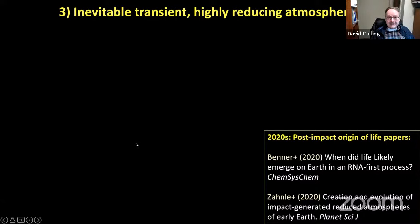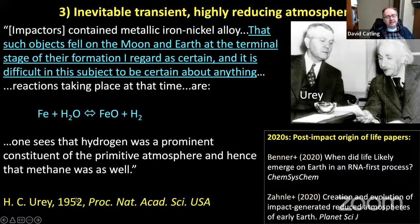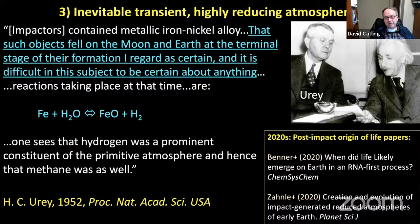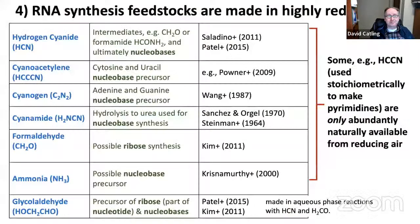In fact, Urey himself suggested this in a 1952 paper. He wrote: 'Impactors containing metallic iron-nickel alloy fell on the moon and the Earth at the terminal stage of formation. I regard this as certain. Reactions taking place at the time would include the reduction of water by iron to make hydrogen. One sees that hydrogen was a prominent constituent of the primitive atmosphere, and hence that methane was as well.' In such a Miller-Urey atmosphere, you can make cyanides — this table shows precursors and possible secondary products for synthesis of RNA building block components.